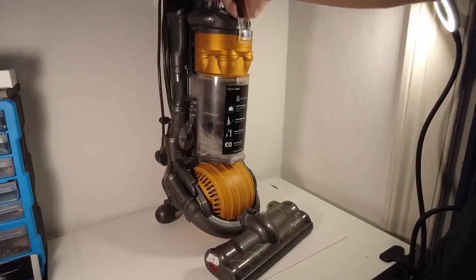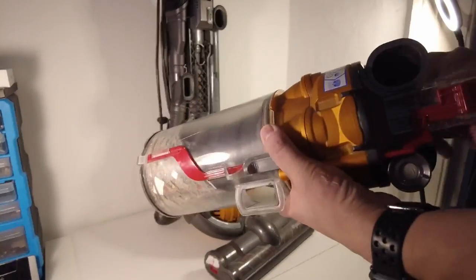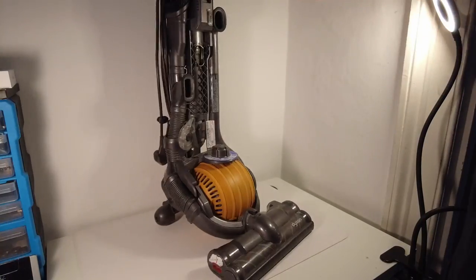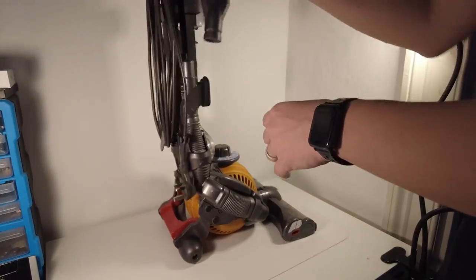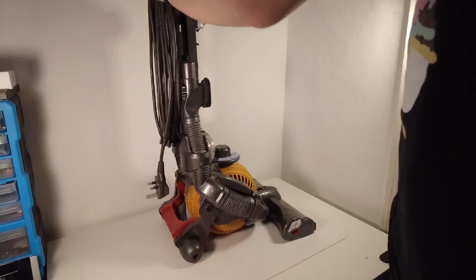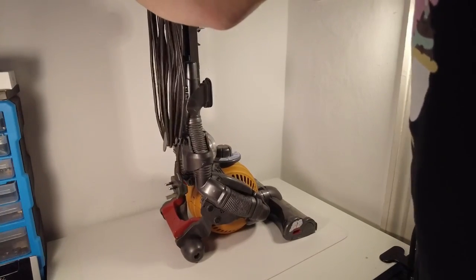Basically what you can do is just take out this part here which contains all of the rubbish that you suck out and then we're going to remove any kind of extra bits and pieces that we don't need and I'm just going to uncoil the cabling so we can actually get to the hose.